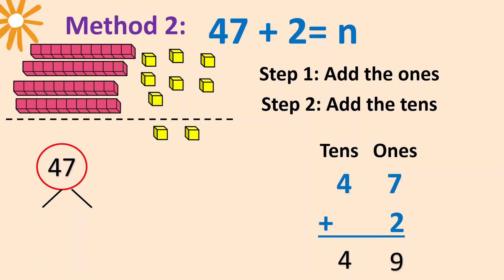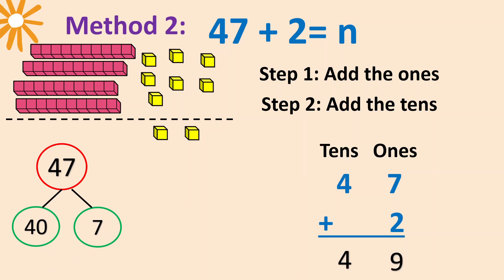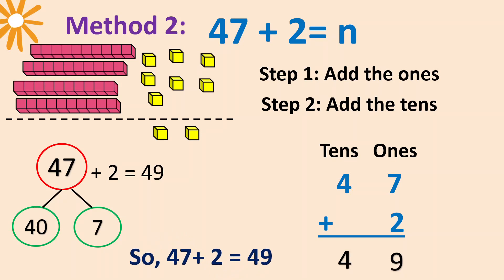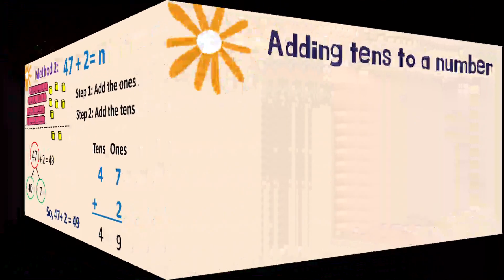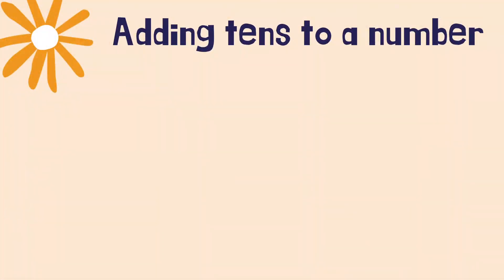When we apply the number bond, we break 47 into 40 and seven, then add two. So 49. Very good! Now let's try adding tens to a number.